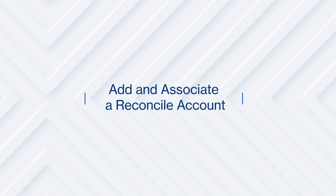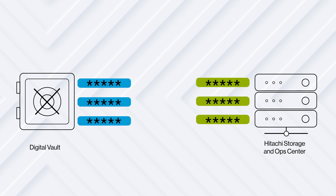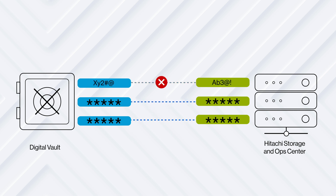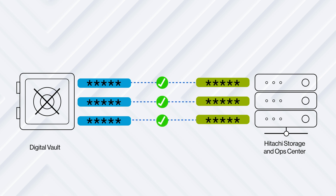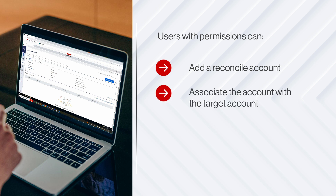Now we'll add and associate a reconcile account. Passwords in the vault must be synchronized with corresponding passwords on remote devices to ensure that they are always available. To accomplish this, the CPM runs a verification process to check whether the passwords are synchronized. If the verification process discovers passwords that are not synchronized with their corresponding password in the vault, the CPM resets both passwords and reconciles them, ensuring that the passwords are resynchronized automatically without any manual intervention. Now we'll show you how to add a reconcile account and associate it with the target account — the Ops Center Common Services User Account and the VSP Storage Local User Account.